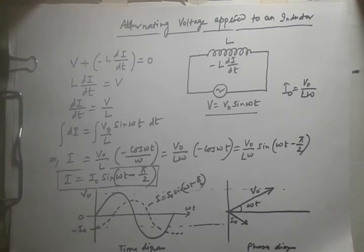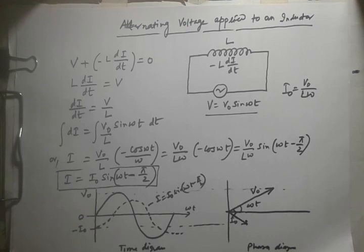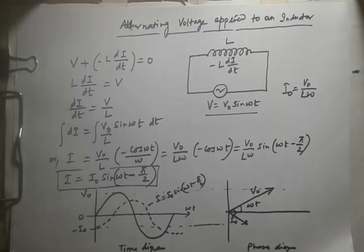This is the purely inductive circuit. The current lags behind the voltage by pi by 2, which is a 90 degree angle. In other words, a phase difference exists between the voltage and current in an AC circuit having a pure inductor. These are the time diagram conclusions. Next we will go on to discuss inductive reactance.